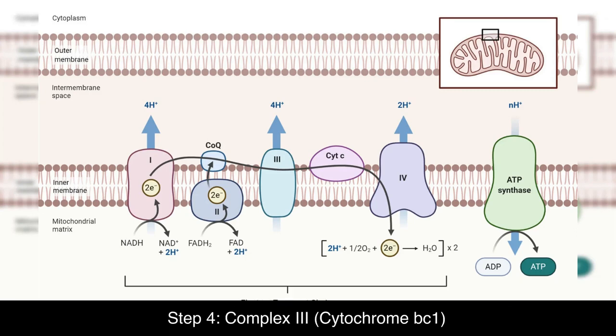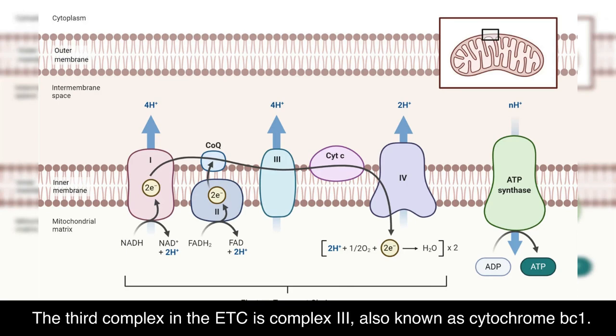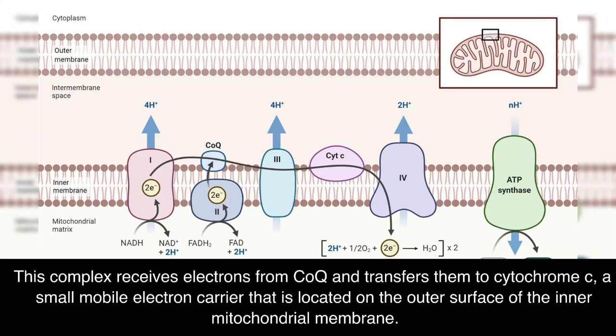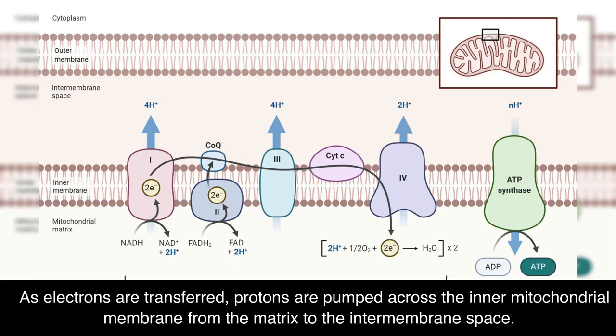Step 4: Complex III — cytochrome BC1. The third complex in the ETC is Complex III, also known as cytochrome BC1. This complex receives electrons from CoQ and transfers them to cytochrome C, a small mobile electron carrier located on the outer surface of the inner mitochondrial membrane. As electrons are transferred, protons are pumped across the inner mitochondrial membrane from the matrix to the intermembrane space.